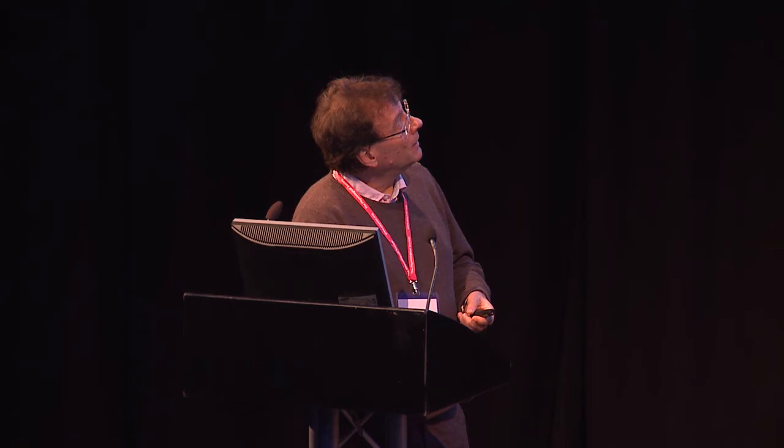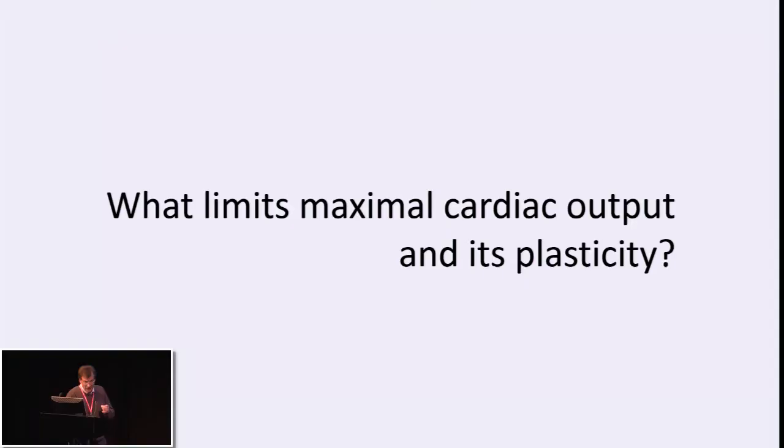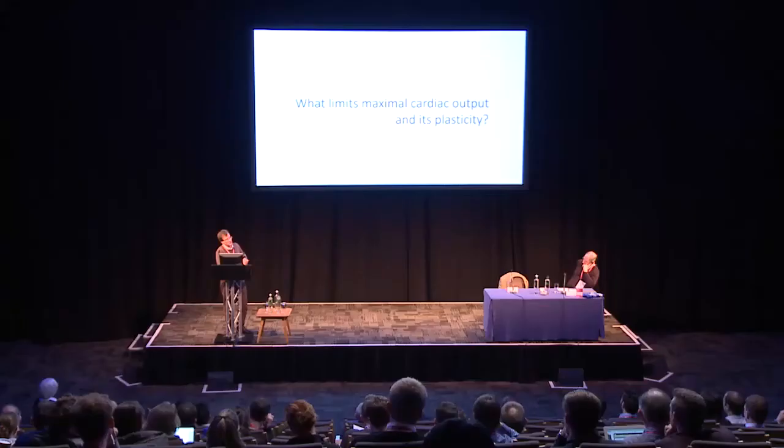To study what limits maximal cardiac output, we chose a model where we know maximal cardiac output is not reached — where subjects end exercise with a cardiac output below their true maximum, meaning there is a functional reserve. This occurs at altitude: in chronic hypoxia, maximum cardiac output is reduced by about 20% at 4,000–5,000 meters, providing a useful model. So we went to Chakaltaya in 1997 in an expedition led by Ben Saltin.